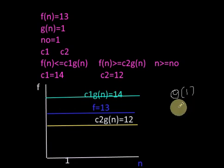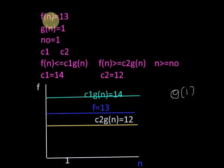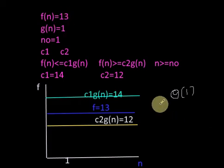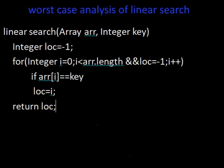So the best case time complexity of linear search is Θ(1). Not only for f(n) = 13 — for any algorithm, if the running time or time complexity is a constant, then the time complexity is represented as Θ(1). It means the algorithm takes a constant time to run irrespective of the value of n. Now let's consider the worst case analysis of linear search.